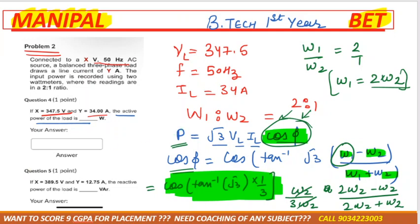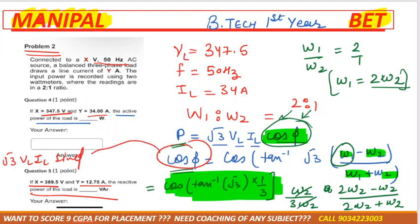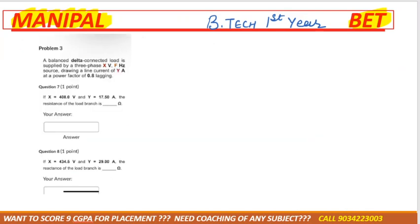Next, they ask for the reactive power of the load. If you get the active power, you can also get the reactive power using root 3 × VL × IL × sin φ. By the same method, calculate cos φ, then derive sin φ, and you will get the reactive power.